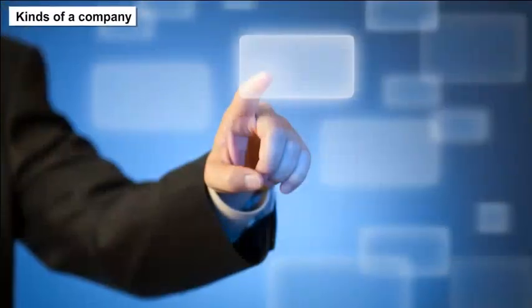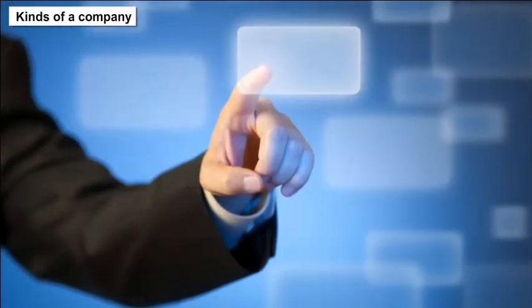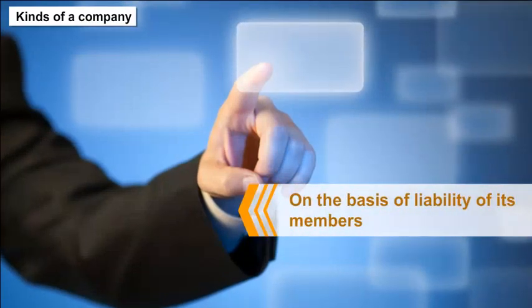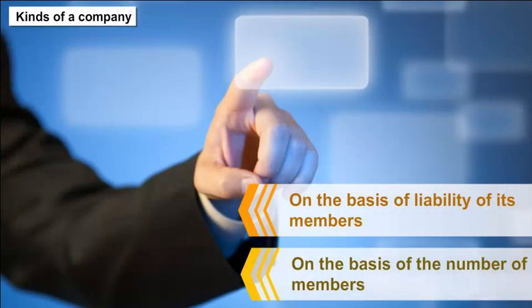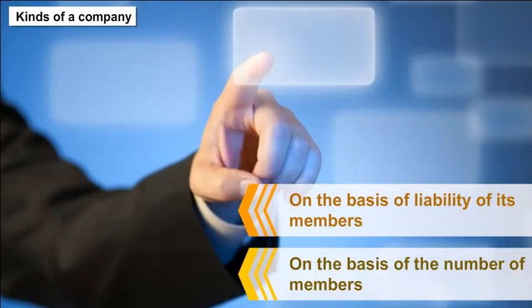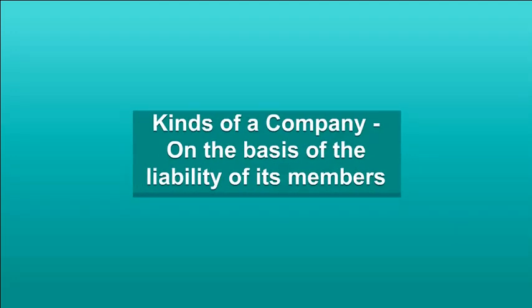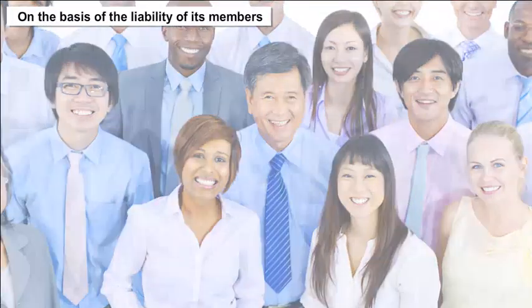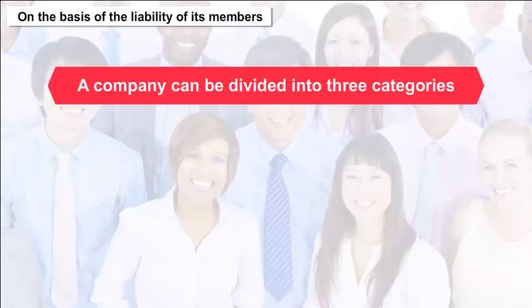Kinds of a Company: There are two ways to classify a company — on the basis of liability of its members, and on the basis of the number of members. On the basis of liability of its members, a company can be divided into three categories.